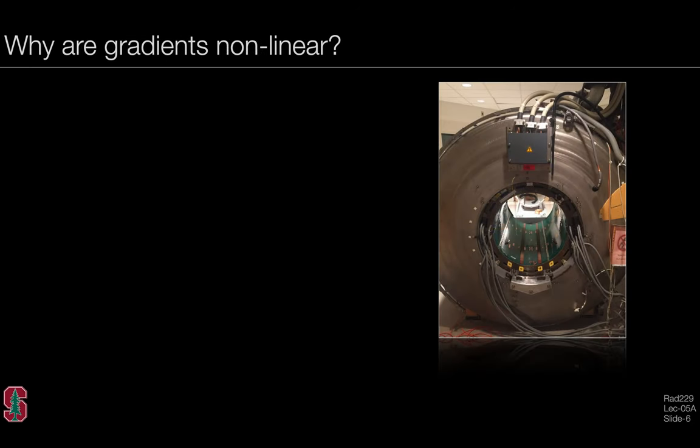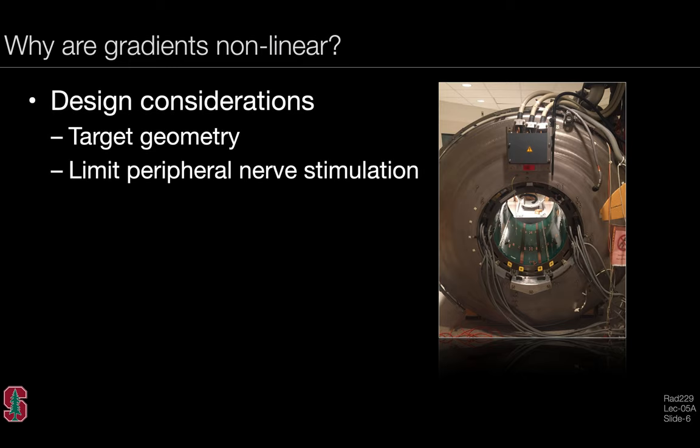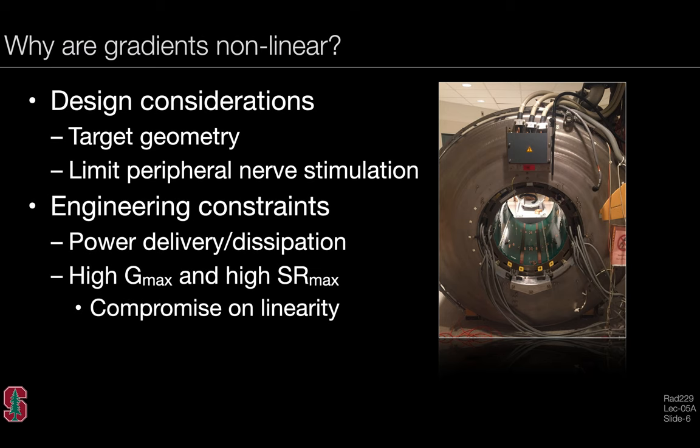So why are the gradients nonlinear in the first place? Well, to begin with, there's some design considerations including the target geometry, limiting peripheral nerve stimulation—something the FDA regulates—and engineering constraints like power delivery and dissipation. As an example, if we want really high gradient maximums and very high slew rates, something generally preferred for high sequence performance, we may have to compromise on linearity to get those gains.